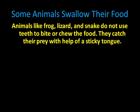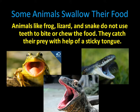Now let's look at the animals which swallow their food. Swallow means you just take in the food without biting it or chewing it. Animals like frog, lizard and snake do not bite or chew the food because they don't have teeth. They just catch the prey and swallow it with the help of their sticky tongue. In the mouth of the frog or the snake there are no teeth — they just open their mouth, put their prey inside and swallow it, just like the way you take water.